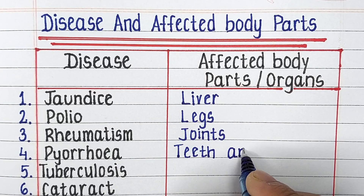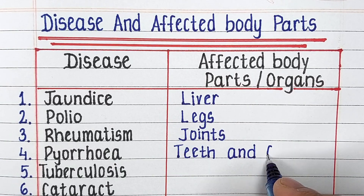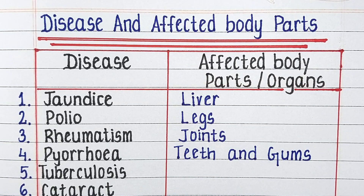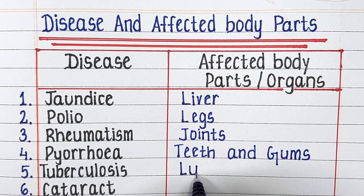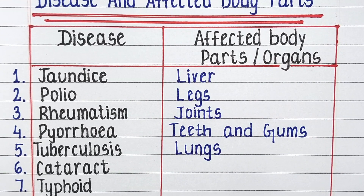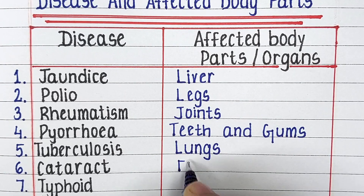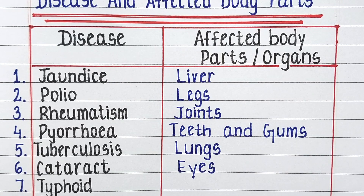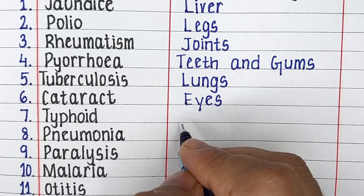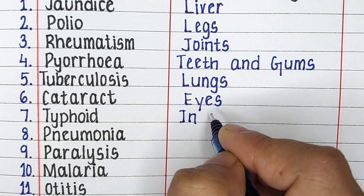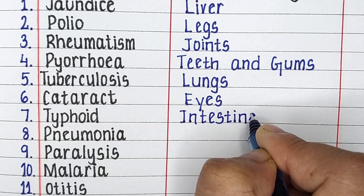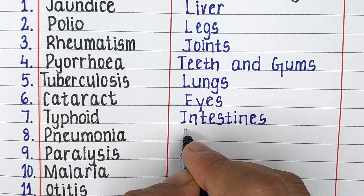Next is rheumatism. Rheumatism affects joints of the human body. The next disease in our list is typhoid. Typhoid affects the intestines of the human body. Next disease is pneumonia.